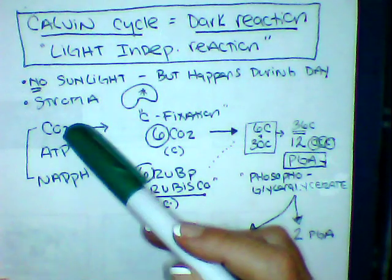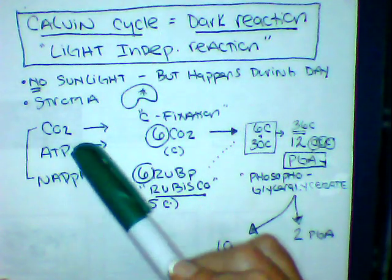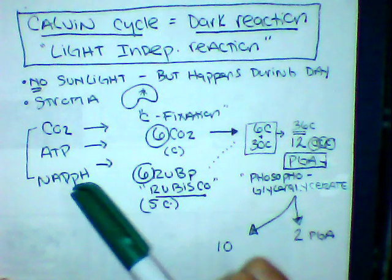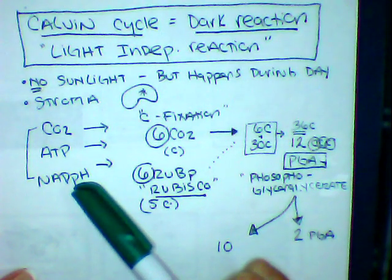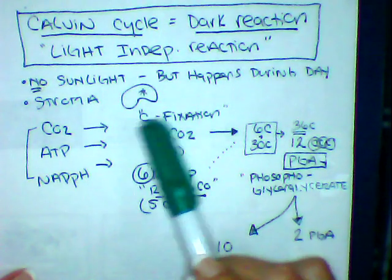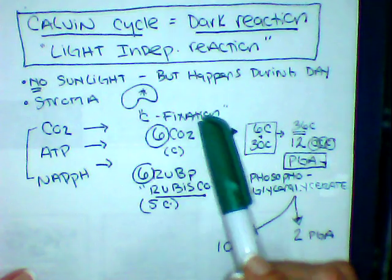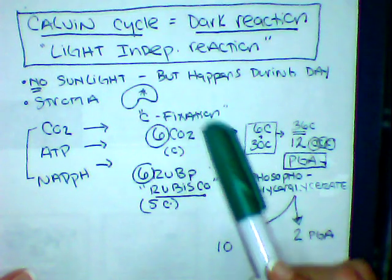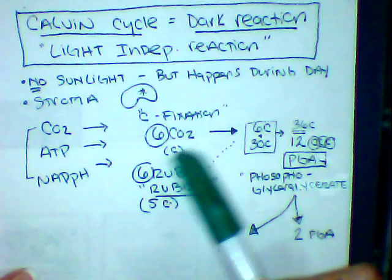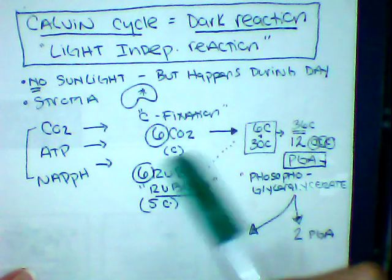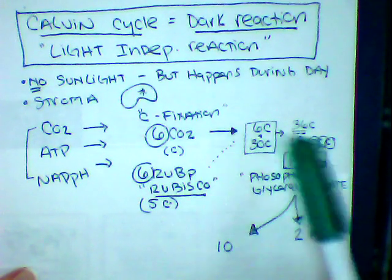So key players: CO2, ATP, and NADPH. We're going to go through what's known as carbon fixation — we're going to fix the carbon into something different.